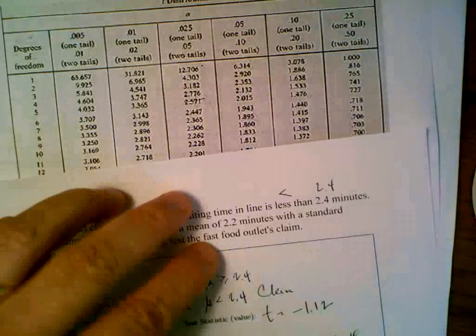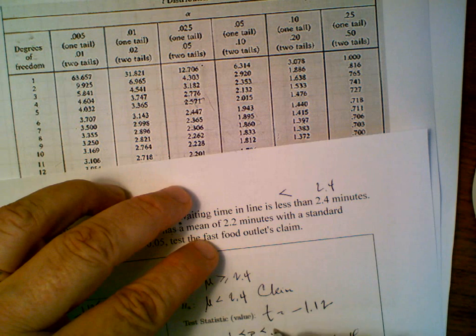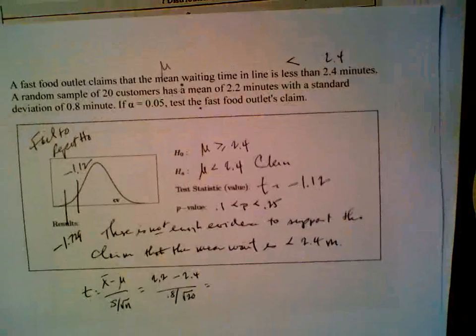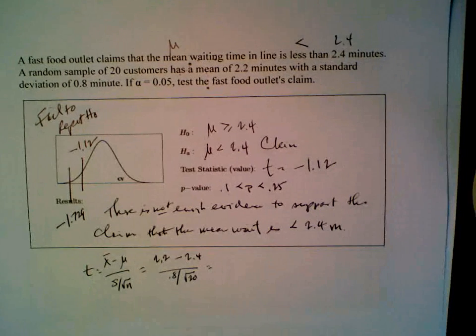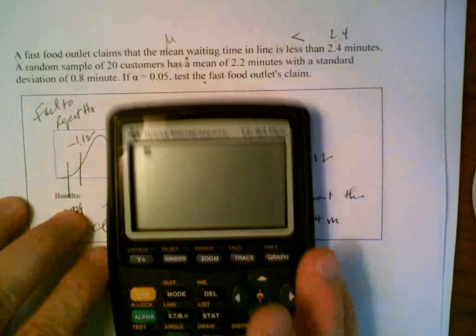So, we'll write that 0.1 is less than p, less than 0.25. So, there's your answer. Let's do the test with the calculator.